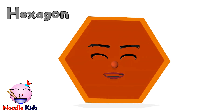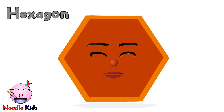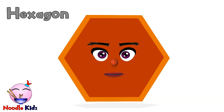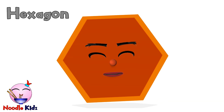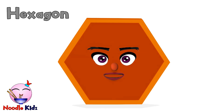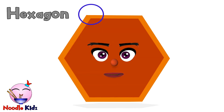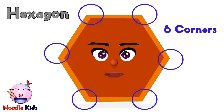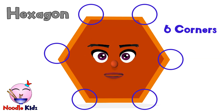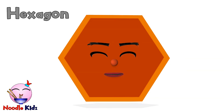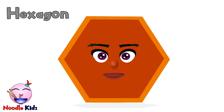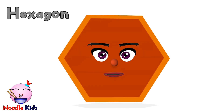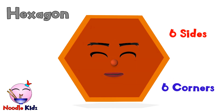What about corners? Do you know how many corners I have? Let's count them: 1, 2, 3, 4, 5, 6. I have 6 corners. Remember, I am a hexagon, and I have 6 sides and 6 corners.